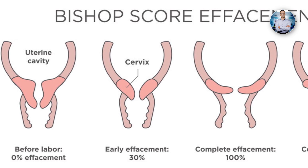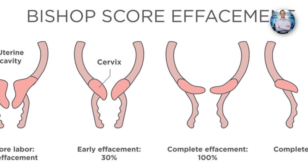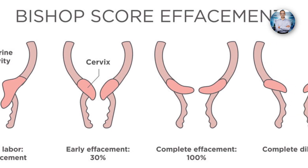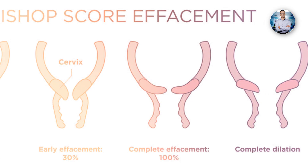Before we induce labor, we would like to know the probability that this woman will have a successful induction. For that, we do some checks called the Bishop score. When we do an internal examination, favorable factors include a soft cervix or neck of the womb, if it is in the mid position, if it is already opened up slightly, and if the head is well inside the pelvis. If the head has not yet entered the pelvis and the cervix is long, thick, and placed on the back side of the vagina, these are not favorable for a successful vaginal delivery.